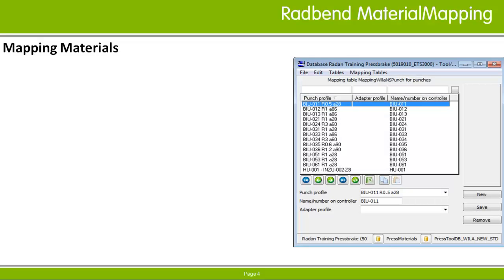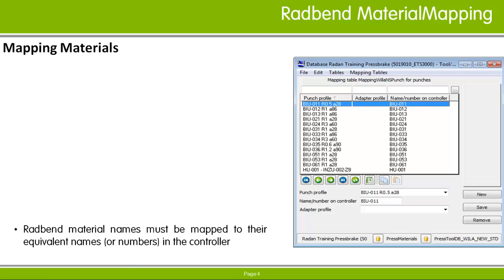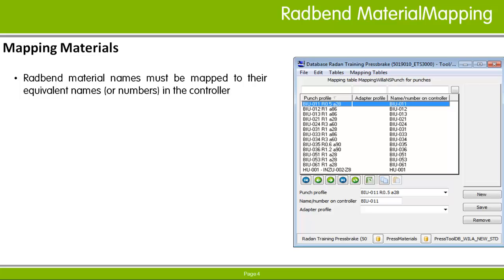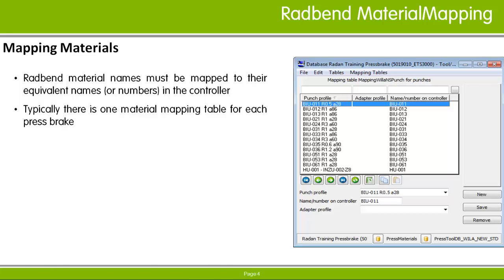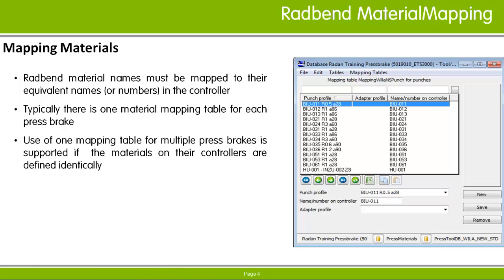Similar to punch and die profiles, materials are defined by a name or a number in the controller. In order to get the correct material properties used in any calculations, the Radband material names must be mapped to their equivalent definitions in the controller. This is done in mapping tables. There is usually just one material mapping table for each Pressbrake, but you can use one mapping table for multiple Pressbrakes if the materials on their controllers are defined identically — they must have the same material name or number and material properties on all machines.